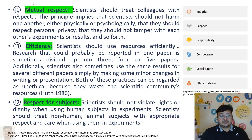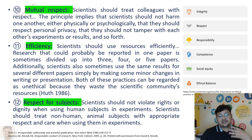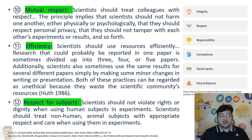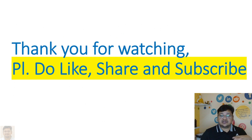Respect for subjects is another principle. Scientists should not violate the rights or dignity of human subjects in experimentation, and they should treat non-human or animal subjects with appropriate respect, avoiding unethical experimentation without prior ethical permission. Ethical permission must be obtained before performing experimentation on subjects. These are the principles of ethical conduct in science and research. Thank you for watching — please share this video with your colleagues and subscribe to my channel.